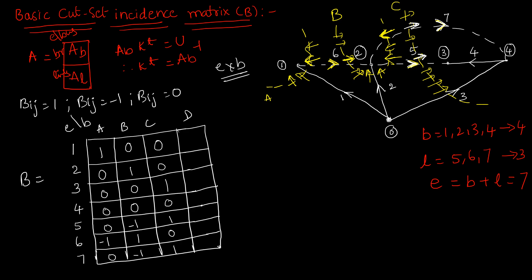Now go for the fourth cut set D, involving branch 4. Cut set D follows the direction of branch 4. Only two elements are cut: elements 4 and 5. Element 4 is obviously positive. Element 5 is in the same direction as the cut set, so put +1. The rest of the elements have no interaction — put zeros. In this way, we can design the basic cut set incidence matrix B.